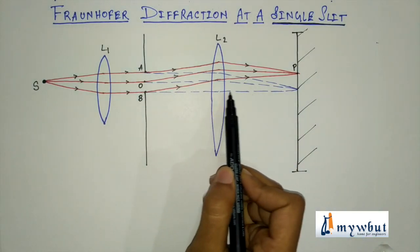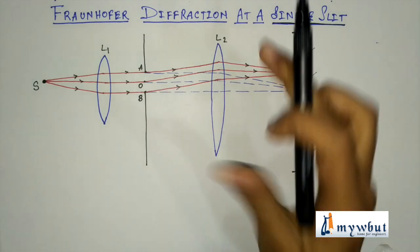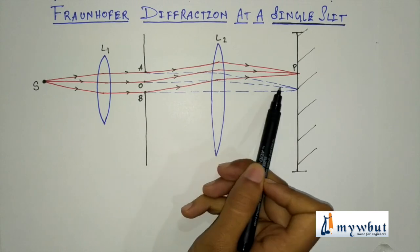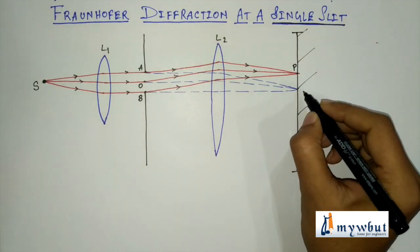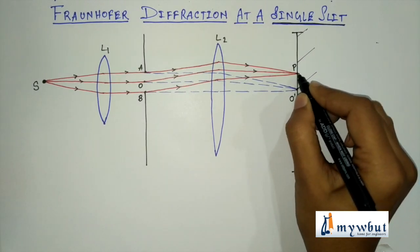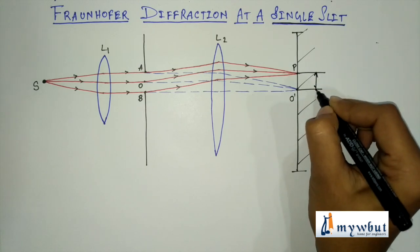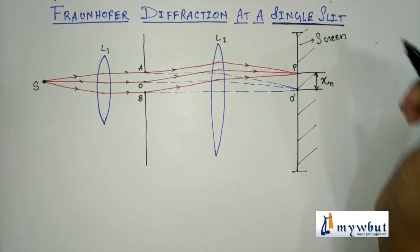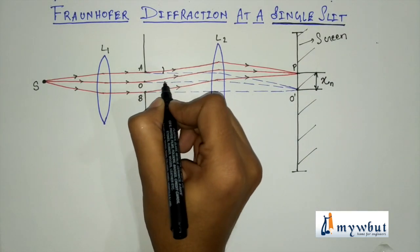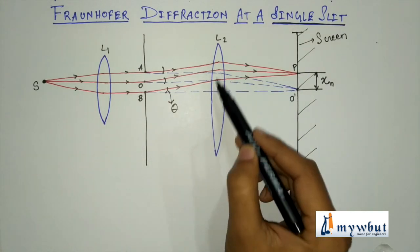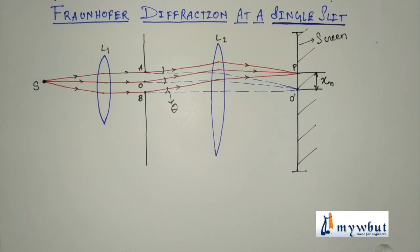I have drawn a dotted line to show that if this lens were not there, the behaviour of light would follow this dotted path. Let the destination of these light beams be O'. The distance between P and O' is Xn. The angle between P, O', and B is theta — that is the deviation of the light beam due to lens L2.